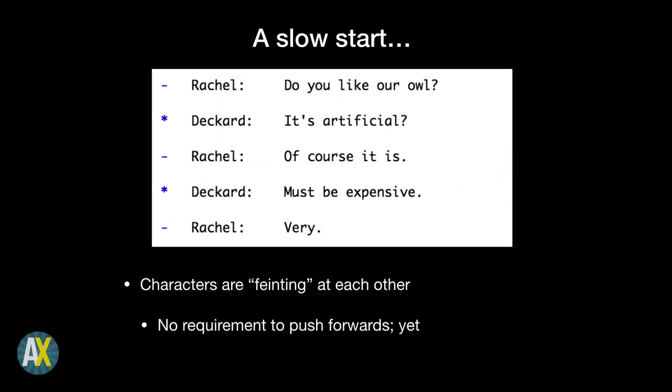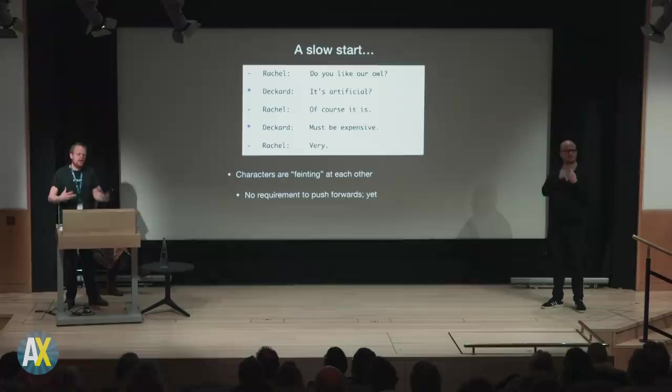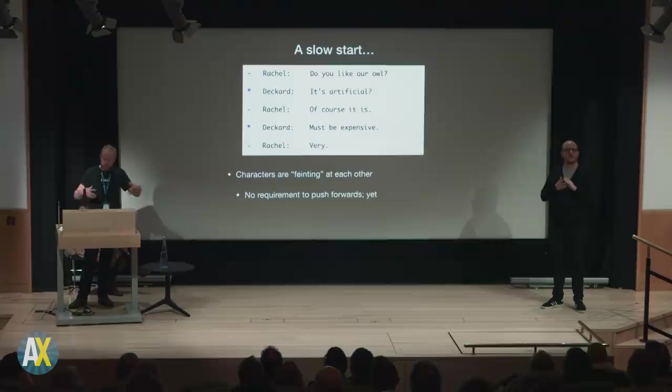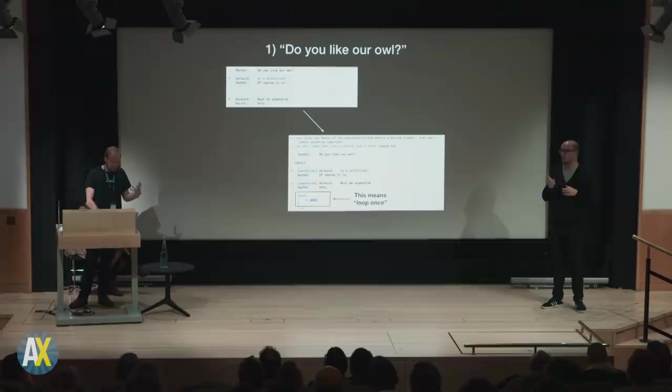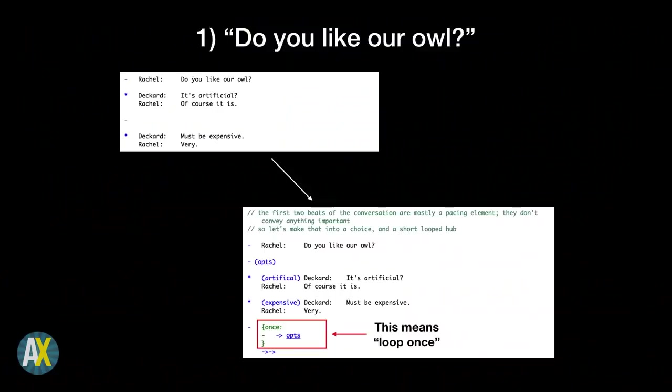The very first beat of the scene: 'Do you like our owl? It's artificial. Of course it is. Must be expensive. Very.' What's actually happening? Two characters are circling each other, fainting around each other — nobody's really saying much, just sizing each other up. There's no major attack yet, no requirement for the scene to barrel forward. This is an opening step. So if we want to make that interactive, what we're talking about is a loop — this is a great place to use a loop, because throwing the player back to a repeated choice tells them the two characters haven't really engaged yet. The structure is the content.